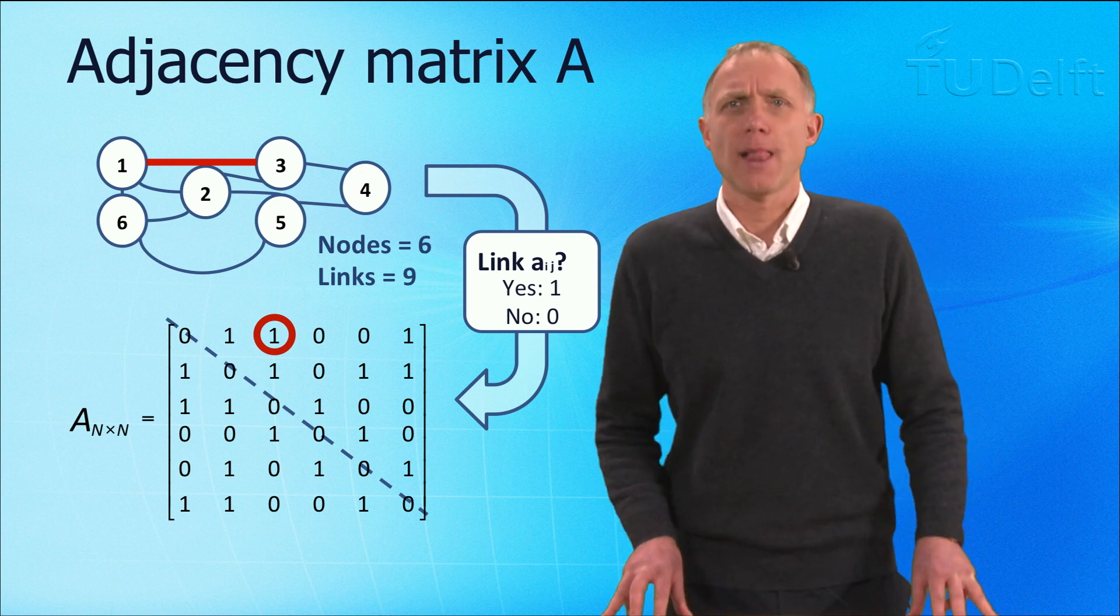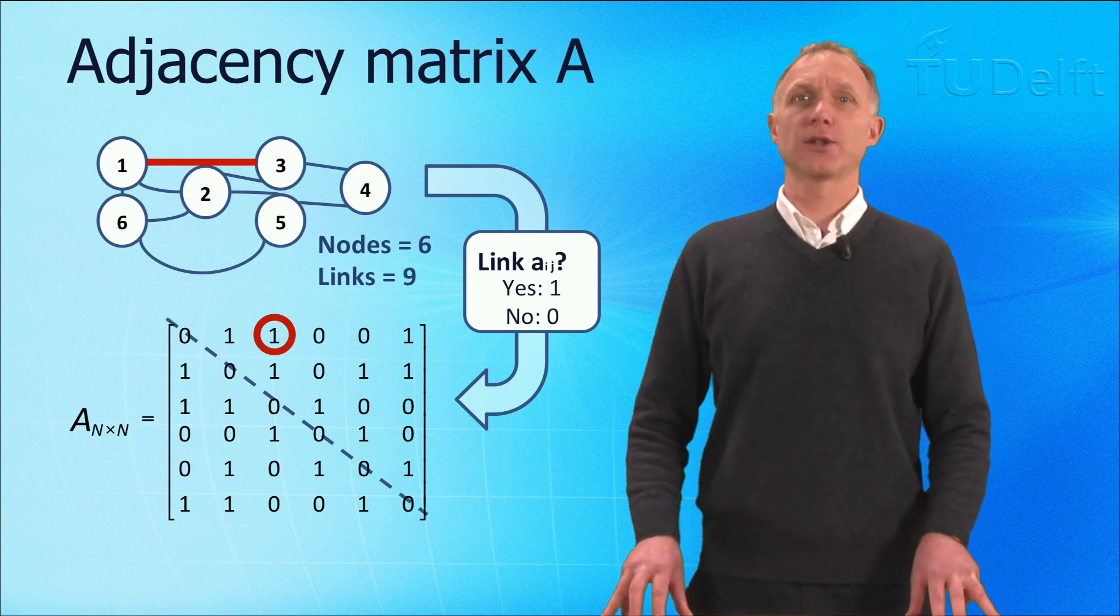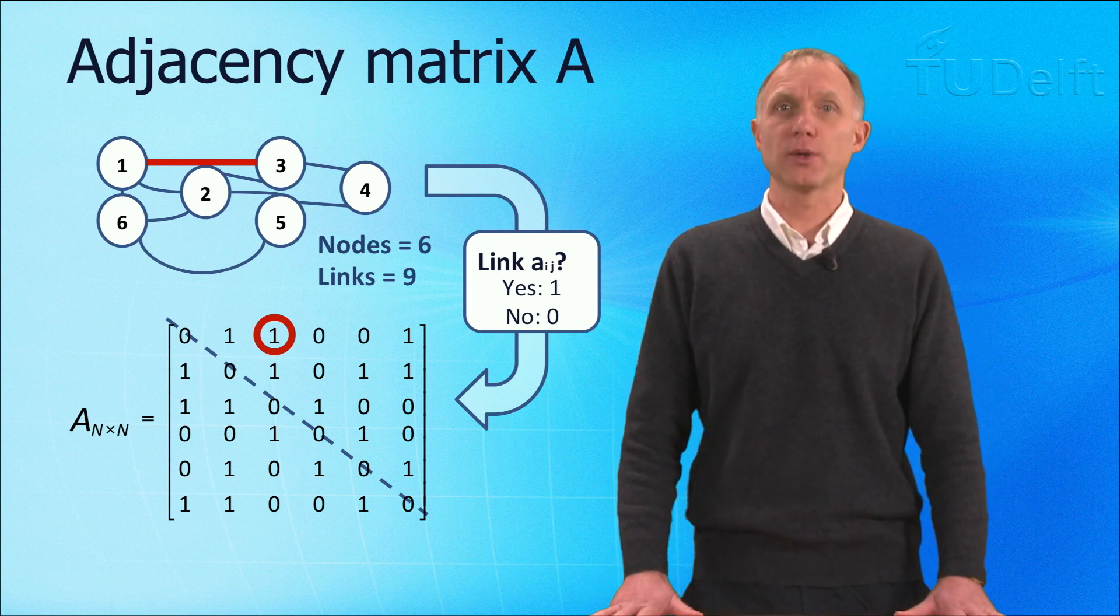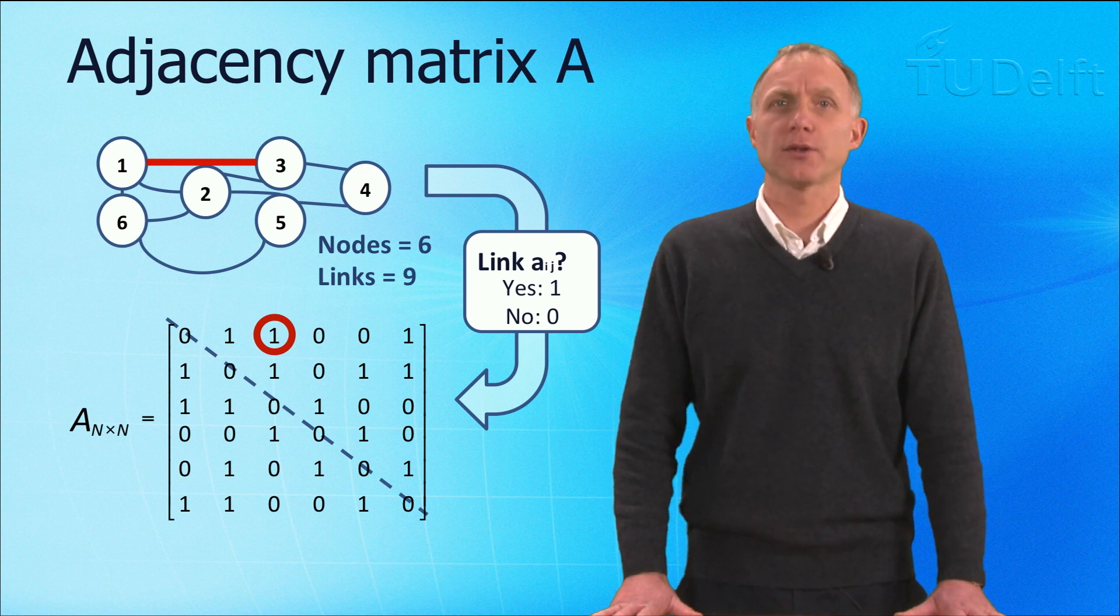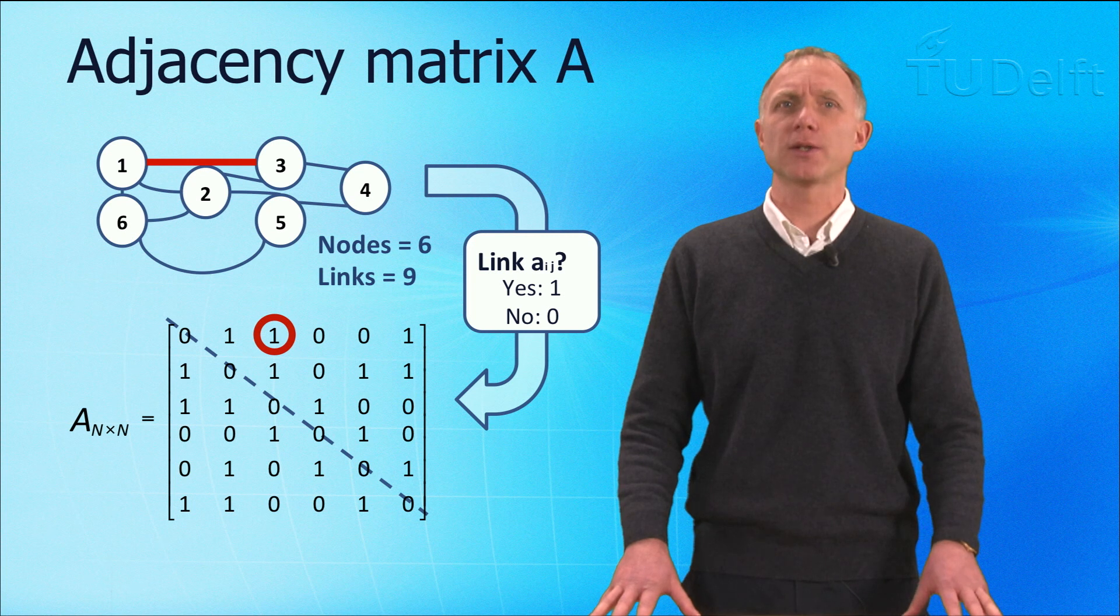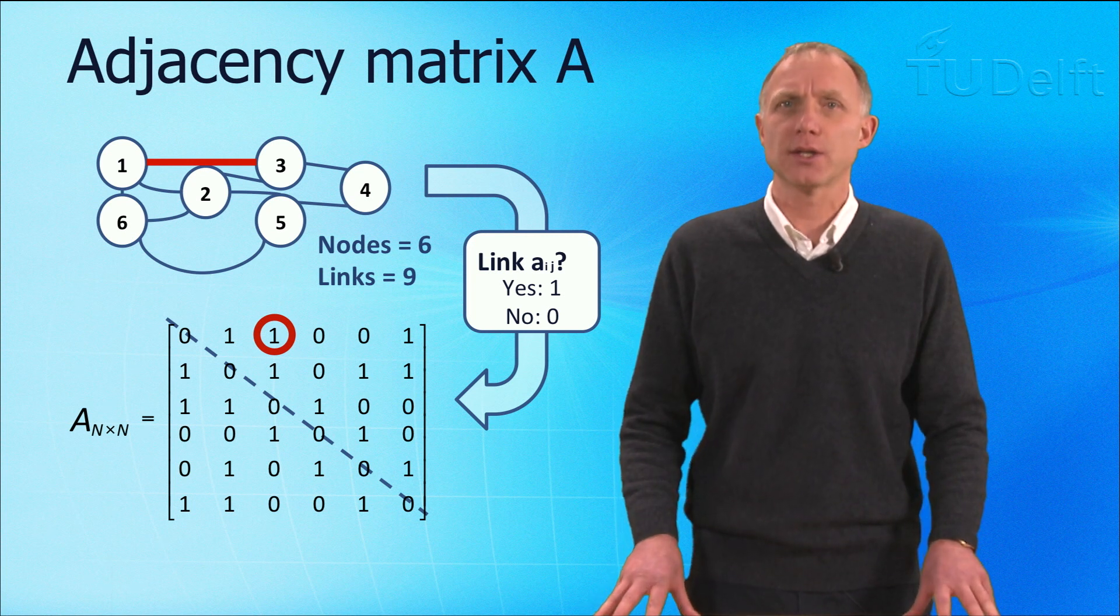Please notice that the diagonal elements are 0, because all the nodes and links cannot be linked to itself. In other words, there are no self loops. For undirected networks, in addition, the adjacency matrix is symmetric.